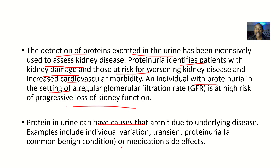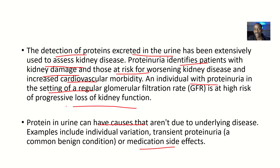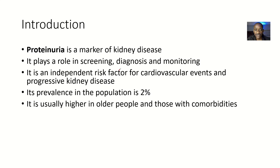Protein in urine can have causes that aren't due to underlying disease. Examples include individual variation and transient proteinuria, which is a common benign condition that usually doesn't require medication and goes on its own. Proteinuria can also be due to some medication side effects — certain medications being taken can cause proteins to be excreted in urine as a side effect.